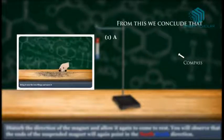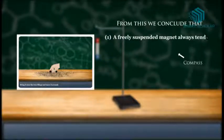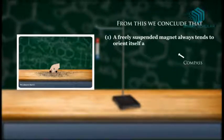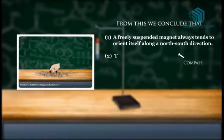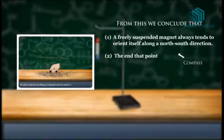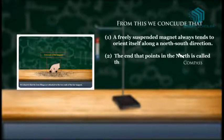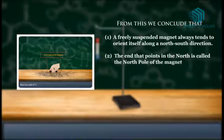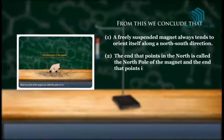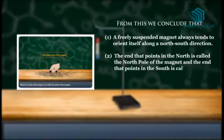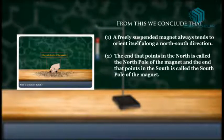From this we conclude that a freely suspended magnet always tends to orient itself along a north-south direction. The end that points in the north is called the north pole of the magnet and the end that points in south is called the south pole of the magnet.